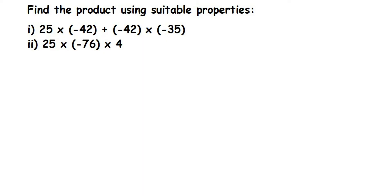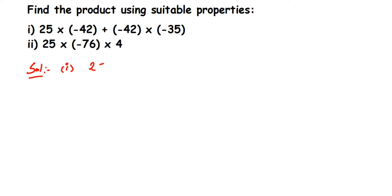Hey everyone, here's a question from integers. Find the product using suitable properties. The first question is: 25 multiplied by minus 42, plus minus 42 multiplied by minus 35. They are asking us to use a property and then solve, so let me write down the question.